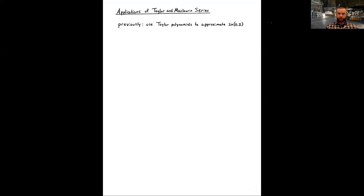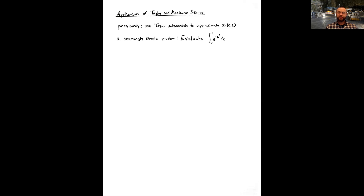Let's think back to a previous lecture when we defined the nth Taylor polynomial. We used that to approximate the value of sine of 0.2 radians, and we got a fairly accurate value by using a few terms in the Maclaurin series for sine of x. Now we're going to build off of that and use Maclaurin series to approximate not a function value but a definite integral — what seems to be a simple problem.